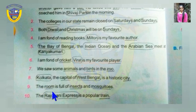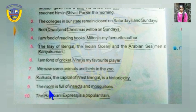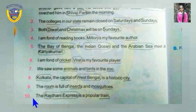The room is full of insects and mosquitoes. Room, insects, and mosquitoes are all common nouns because no specific names are given. Number ten: Rajdhani Express is a popular train. Rajdhani Express is a specific name of a train, so it's a proper noun. Train itself is a common noun.